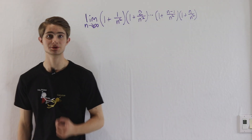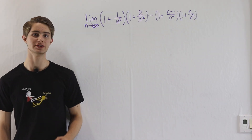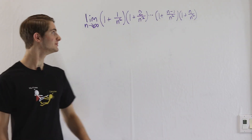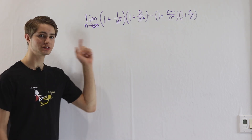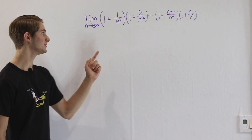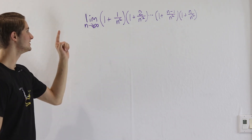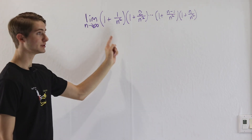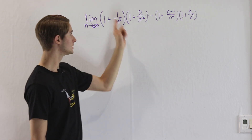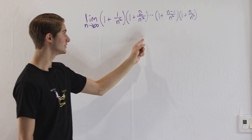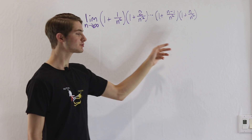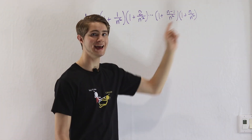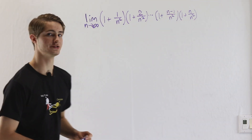Today I'm wearing my awesome new calculus shirt. Thank you to Black Pen Red Pen for sending this to me. We are going to do this awesome calculus problem: the limit as n approaches infinity of 1 plus 1 over n squared times 1 plus 2 over n squared times 1 plus 3 over n squared, and so on up to 1 plus n over n squared.